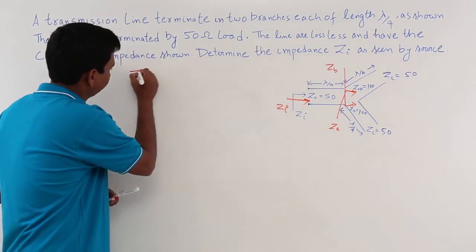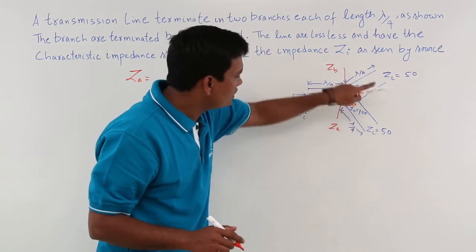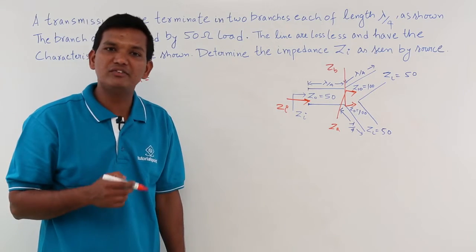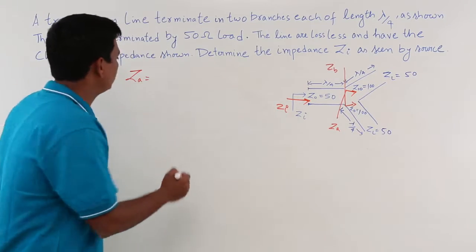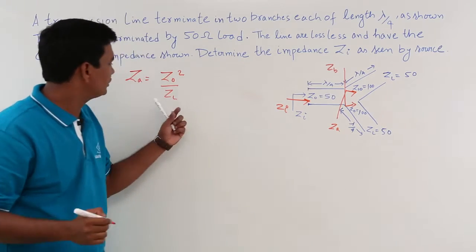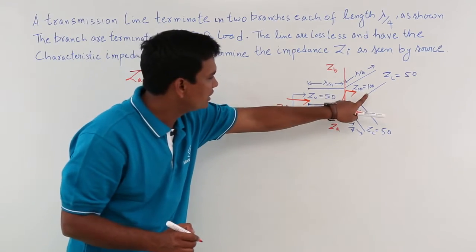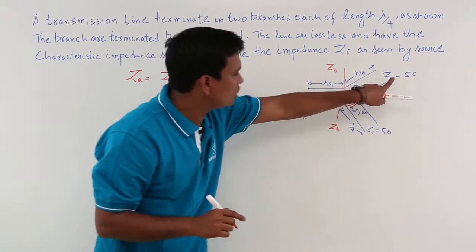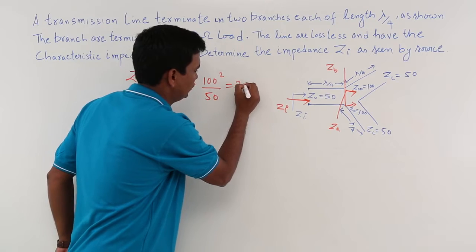What would be ZA? Looking at this point, the length of the transmission line is lambda by 4. We already know from previous videos that if the length is lambda by 4, the input impedance is Z naught squared by ZL. Here Z naught is 100, so it is 100 squared divided by ZL which is 50. Solving this gives 200 ohms.